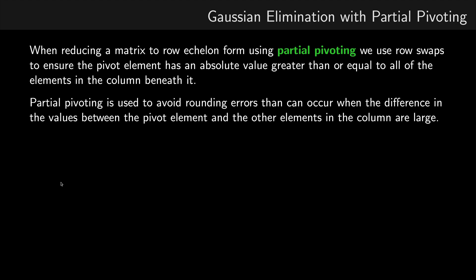Explained Gaussian elimination with partial pivoting. Now this is based upon a previous video I've done about Gaussian elimination. So if you haven't watched that yet, I suggest you go and watch that now. So we've already seen that Gaussian elimination is a process of reducing the matrix to row echelon form by using elementary row operations.